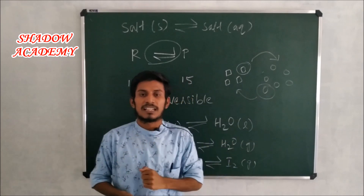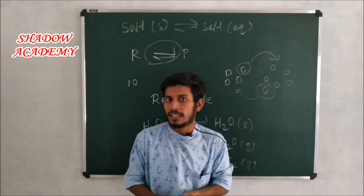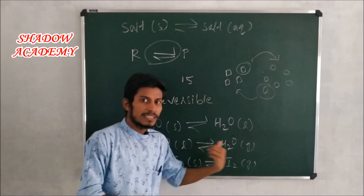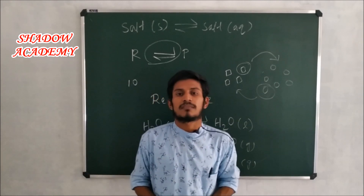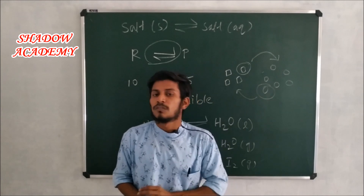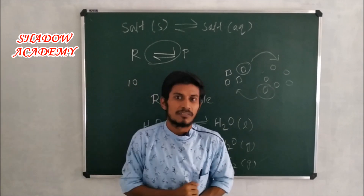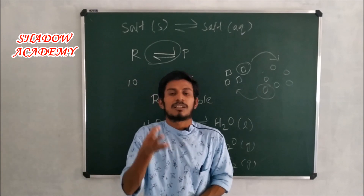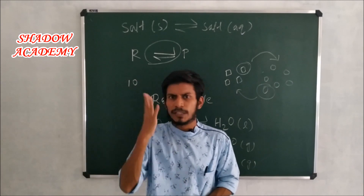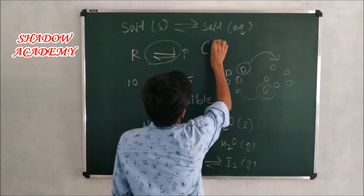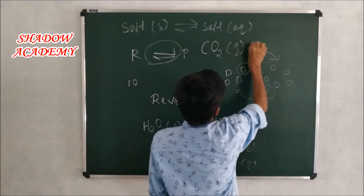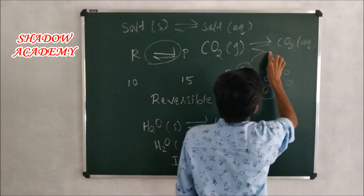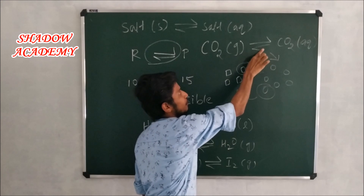The fifth type — the last type of physical process — is gases in liquid. For example, soda water. Soda water is sealed with high pressure. We have to run gas — it is carbon dioxide. We need to take that equation: CO2 in the gas state, CO2 in the aqueous state.